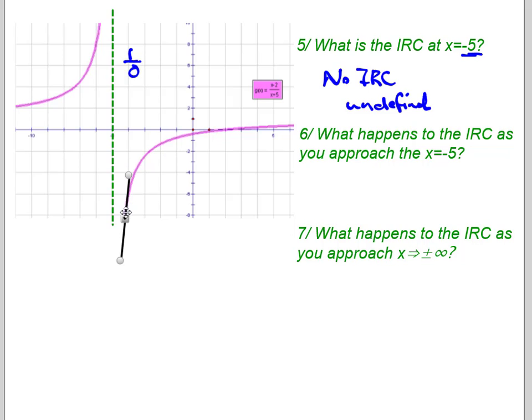And the slopes would just keep getting bigger and bigger and bigger. On the right-hand side, they would be positive. On the left-hand side, they would also be positive. So these slopes would just have very large positive values as you approach the X equals negative five for the IRC. So we would have large positive slopes as you approach.